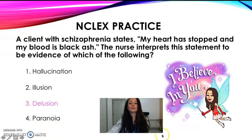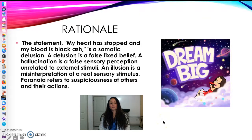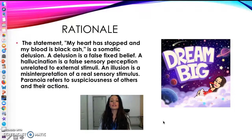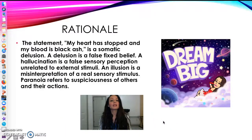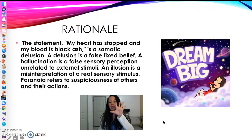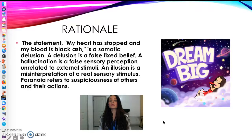The rationale: 'My heart has stopped and my blood is black ash' is a somatic delusion. A somatic delusion often involves believing the body is rotting from the inside — it is a false fixed belief. To review: a delusion is a false fixed belief; a hallucination is a false sensory perception unrelated to external stimuli — remember your five senses; an illusion is a misinterpretation of a real sensory stimulus; and paranoia refers to suspicion of others and their actions — for example, 'the FBI is coming to get me' or 'someone's watching me.'